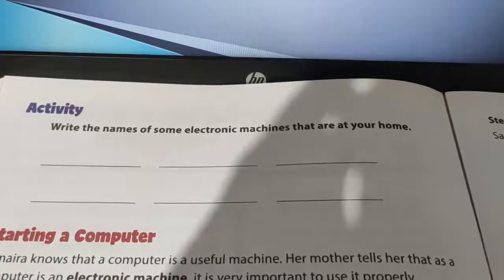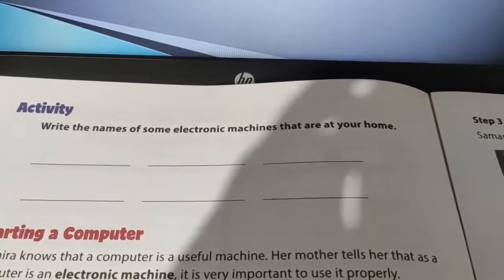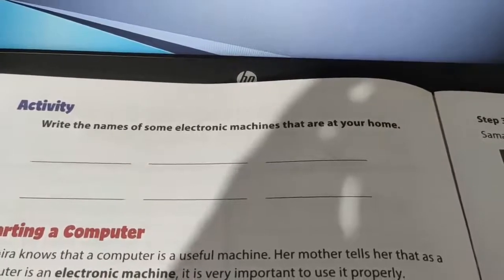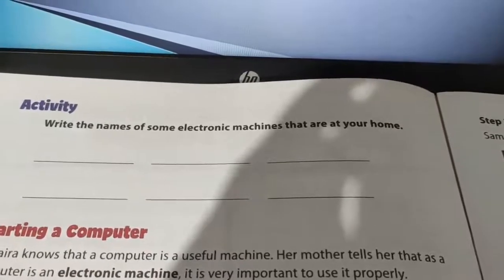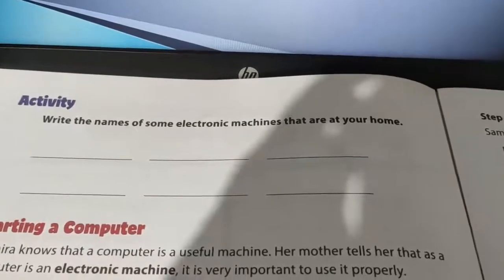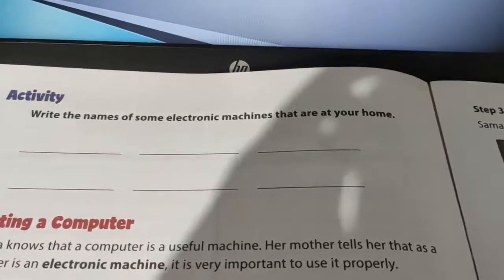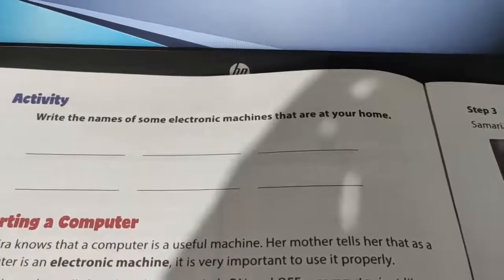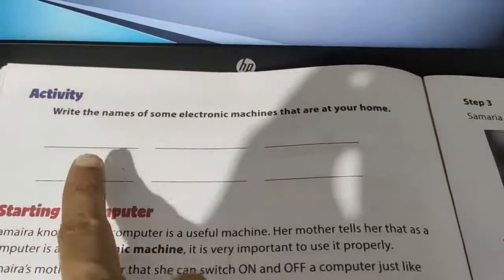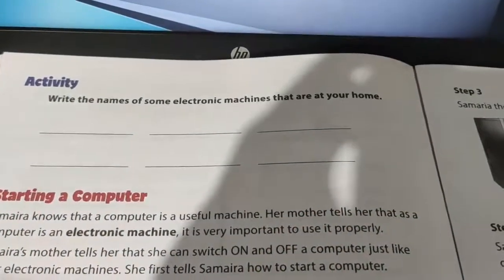Now here dear children, you have to do this activity at your home. Write the names of some electronic machines that are at your home. We did this activity previously as well. Some electronic machines which you are using and are familiar with in your daily routine or household work — you should write six names of machines. Next class we will discuss and continue.